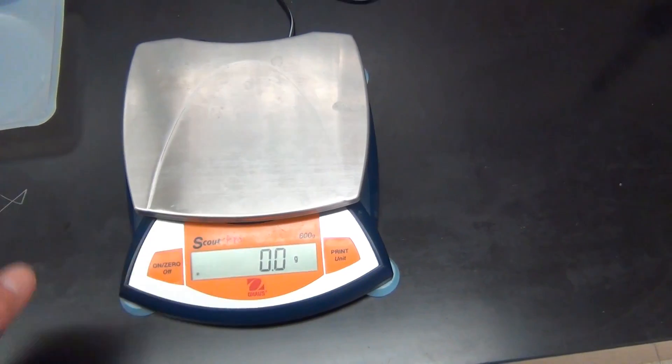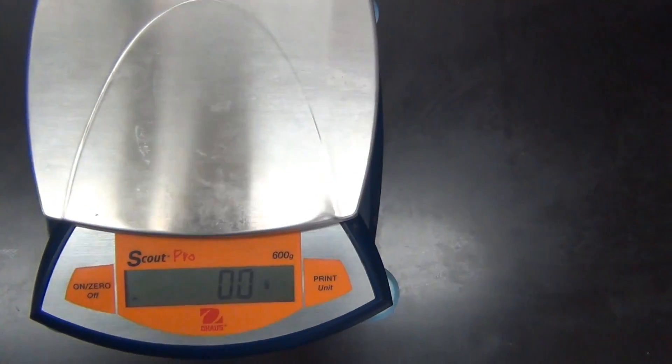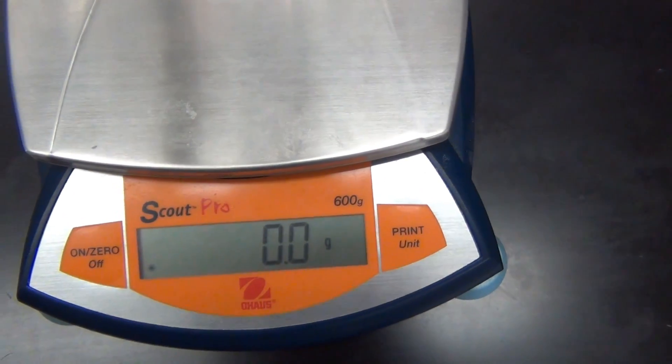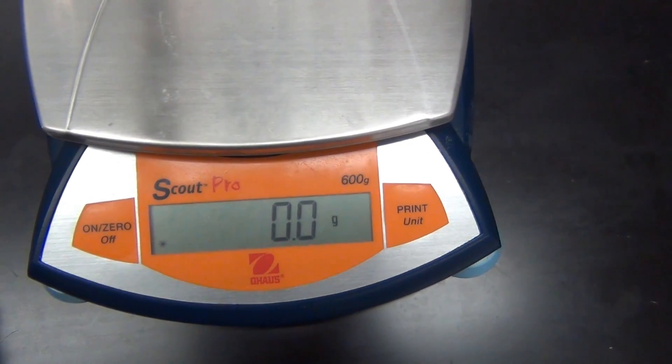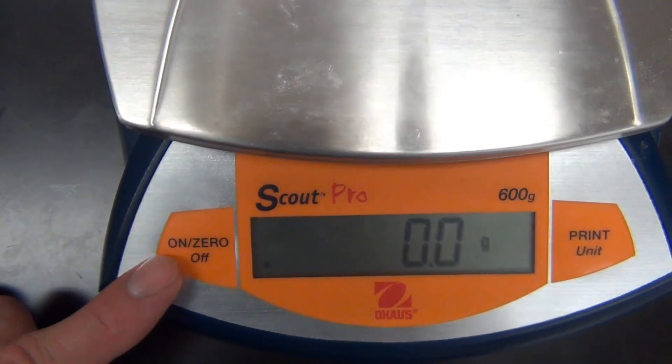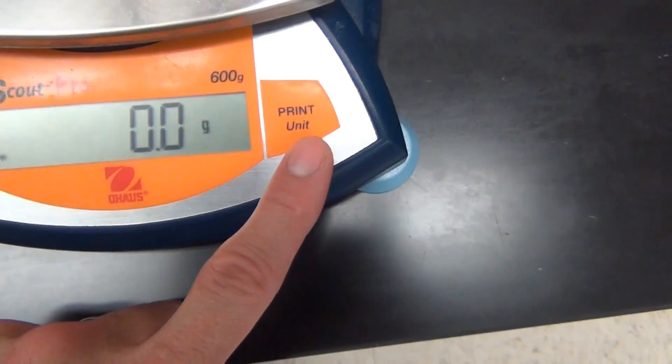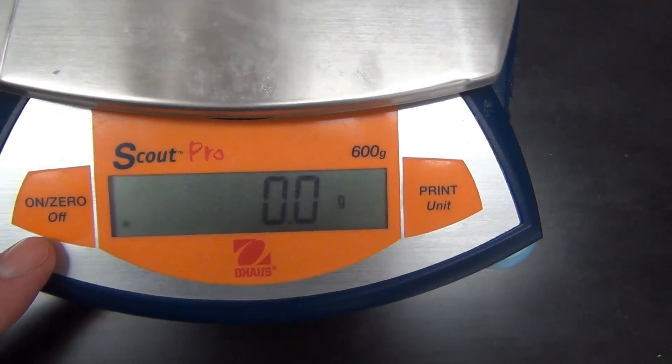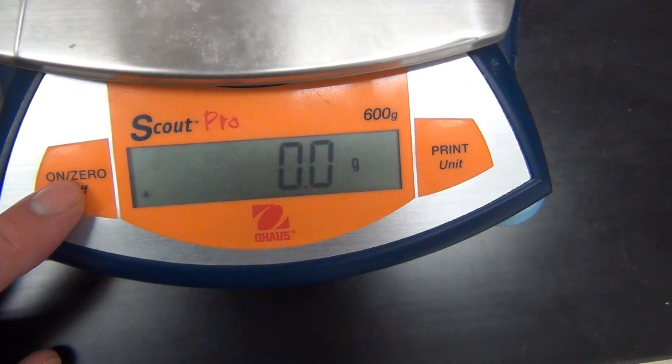This balance right here is a top loading balance. And as you can see, it will measure to the nearest tenth of a gram and it will measure up to a 600 gram limit. As with any piece of equipment or instrument, you need to be familiar with the buttons on it. There is an on-off switch and there is also a print unit button which we will not be using. However, this switch will be very important as it also is the on-off switch as well as the zero switch.